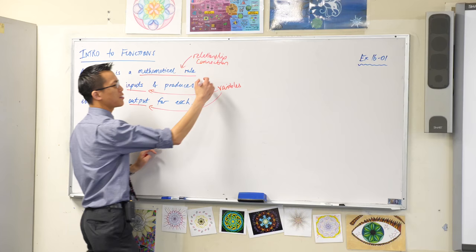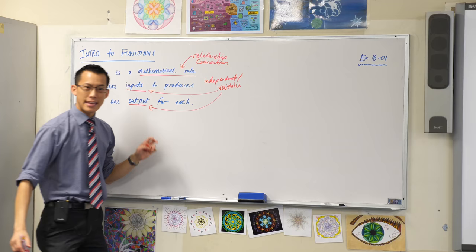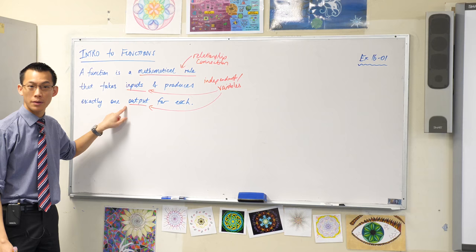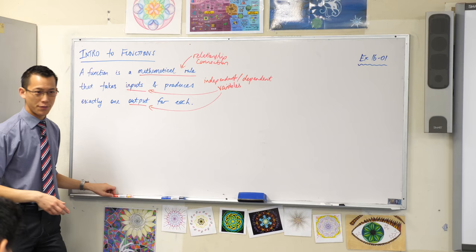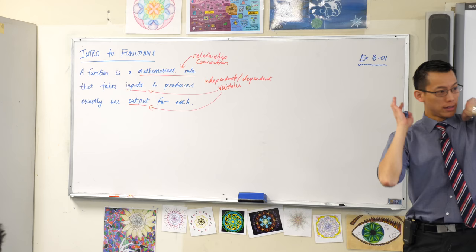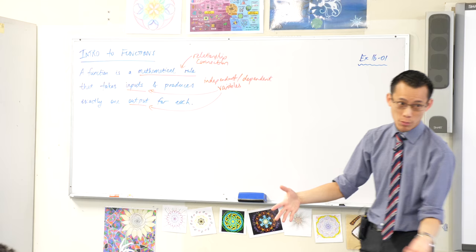The input we call the independent variable, and the output is what sort of depends on the input. Like you change this and this will become something else. So we call the output the dependent variable. Exploring independent and dependent variables are really important because we're very interested in numbers as they change. This is an idea that you've met before, we've just not put formal language or notation underneath it, so let me give you some quick examples.